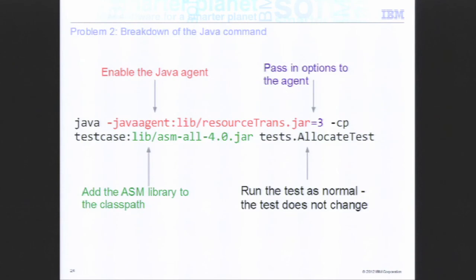Here's a breakdown of the command for the memory exhaustion test. We're not using the boot class path this time because the classes we're transforming are application classes — we're not changing any SDK classes that require the boot class path. The ASM class libraries are added to the class path, we're passing in the option three into the agent, and the test itself hasn't changed.